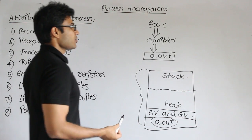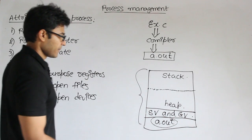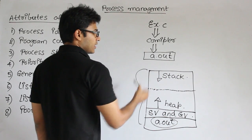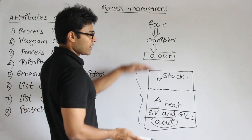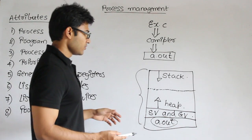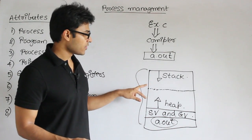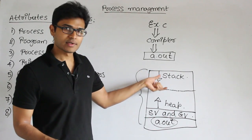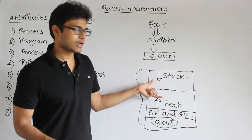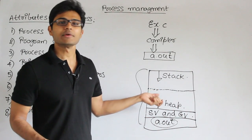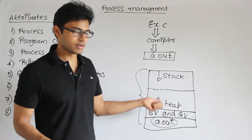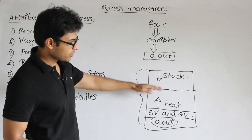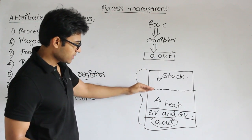Static variables and global variables are in one section, heap is in another, and stack is in another. One important thing about heap and stack: heap will grow upwards and stack will grow downwards. If both grew in the same direction, we wouldn't know where to start each one. In some programs stack takes more space, in others heap takes more — we don't know which one will need how much space before executing.